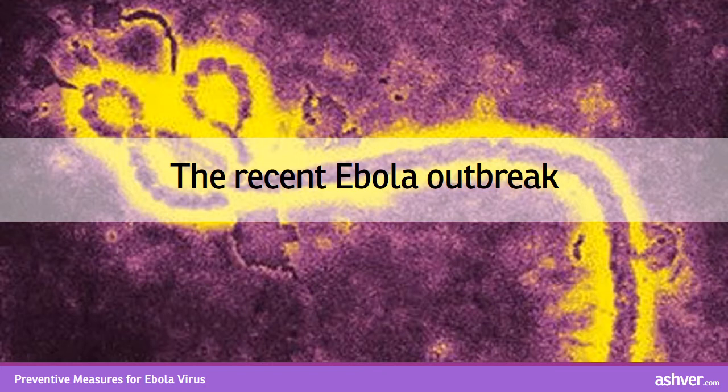Two U.S. missionaries, Dr. Kent Brantley and Ms. Nancy Writebol, were detected with Ebola infection and airlifted from Liberia to a specialist isolation unit in Atlanta for treatment. Cross-continent air travel, rapid spread of disease, and lack of any specific treatment or vaccines is the major cause of concern. Ebola first appeared in 1976 in two simultaneous outbreaks in Sudan and the Democratic Republic of Congo. The latter was in a village situated near the Ebola River, from which the disease got its name.